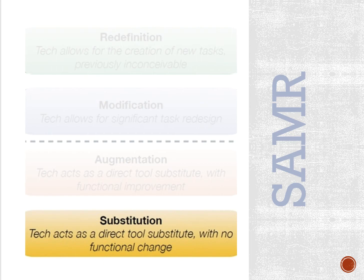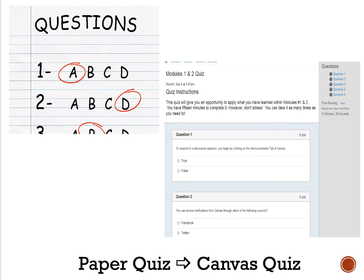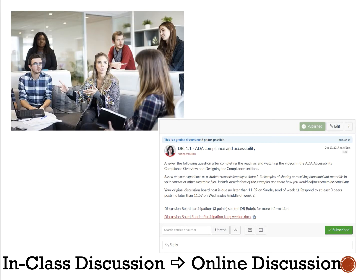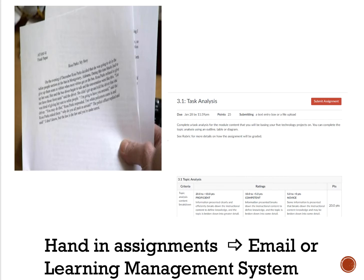The first level of SAMR is substitution. Substitution involves doing the same thing you would do without technology and does not modify the task beyond the use of a technology substitution. We often use this when we are creating and integrating technology into our teaching. Some examples of substitution are textbooks to e-books, paper quizzes to Canvas or LMS quizzes, handwritten papers to typed papers using a software program, in-class discussions to using the online discussion board, traditional lectures to video lectures, and handing in assignments to emailing or turning in assignments via the learning management system.